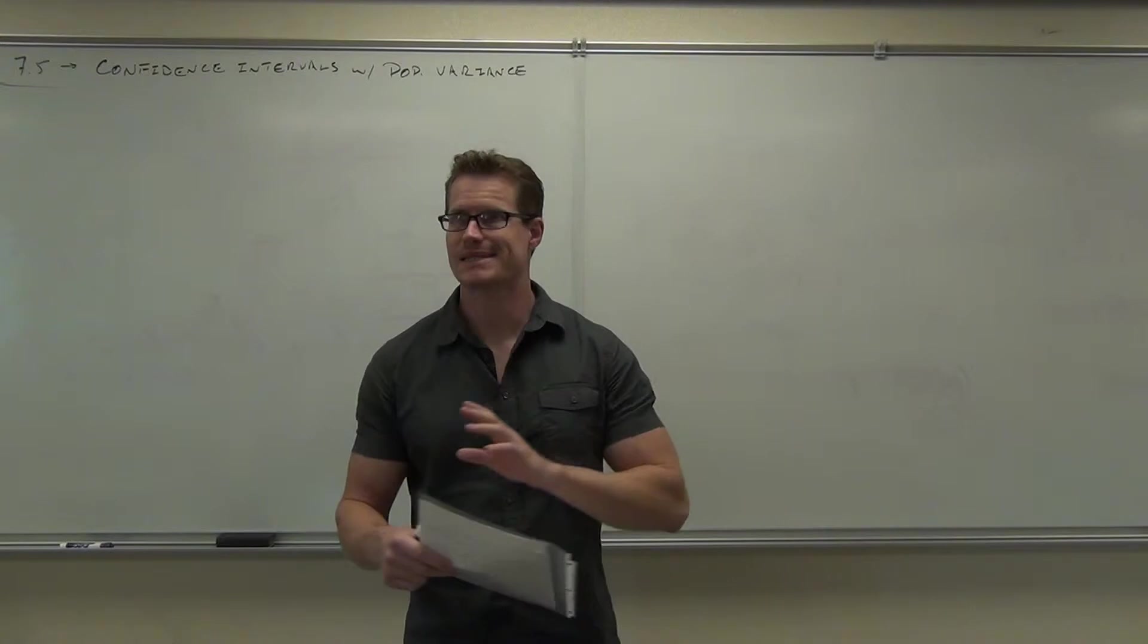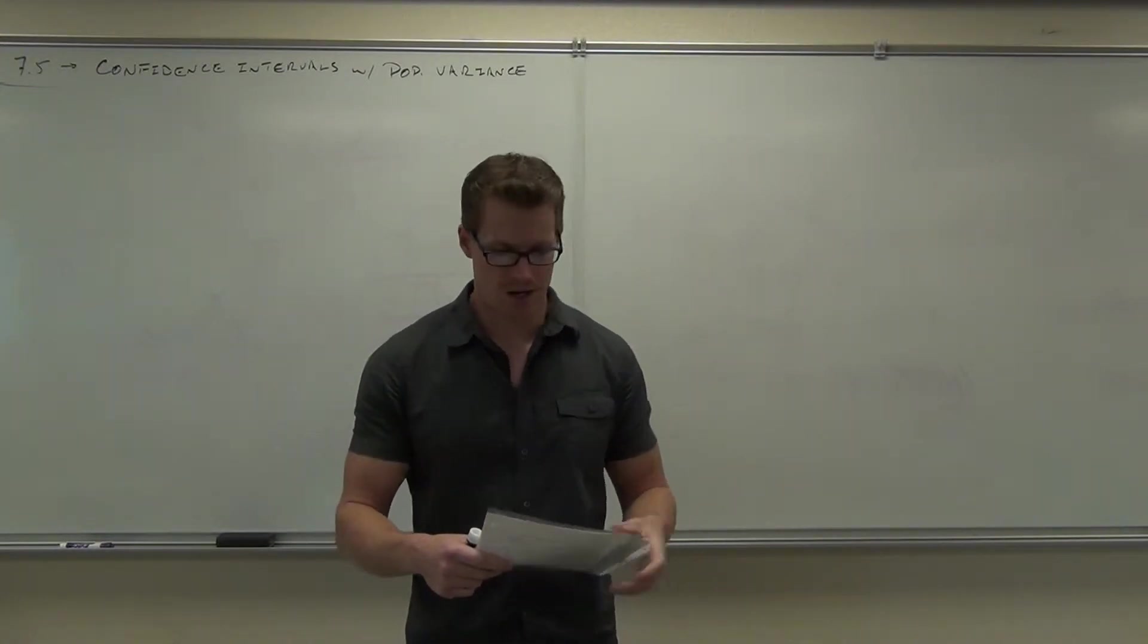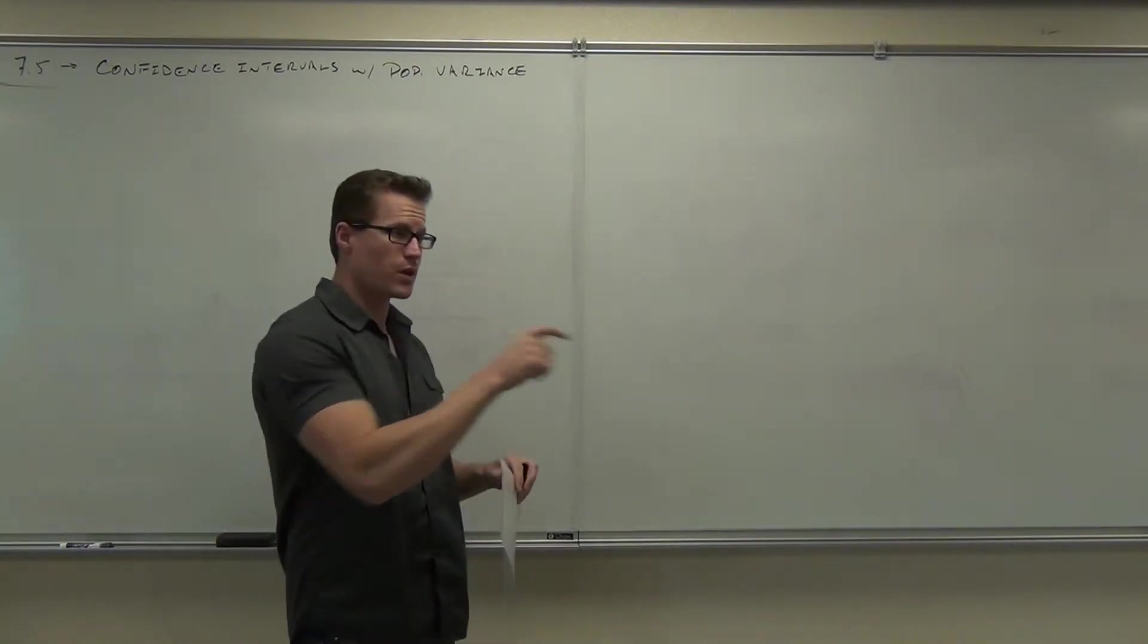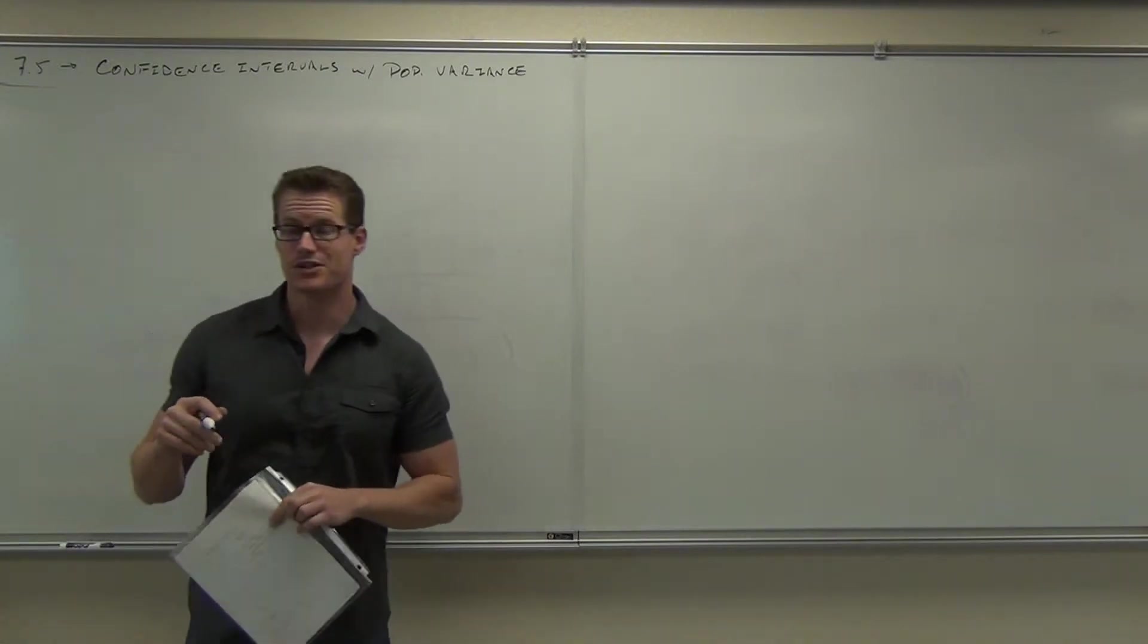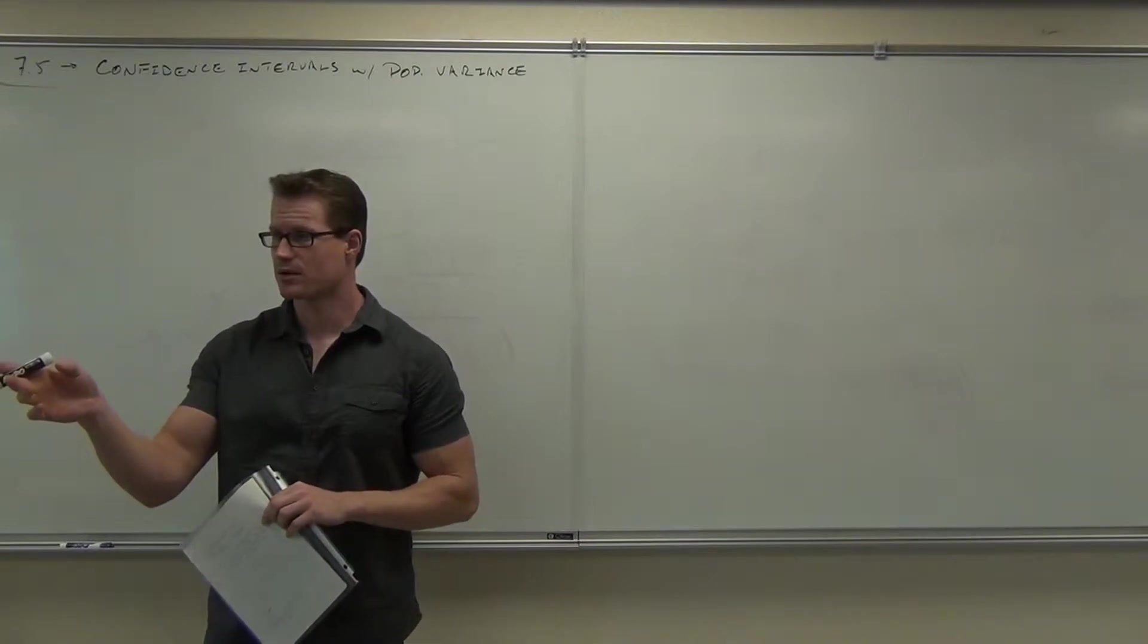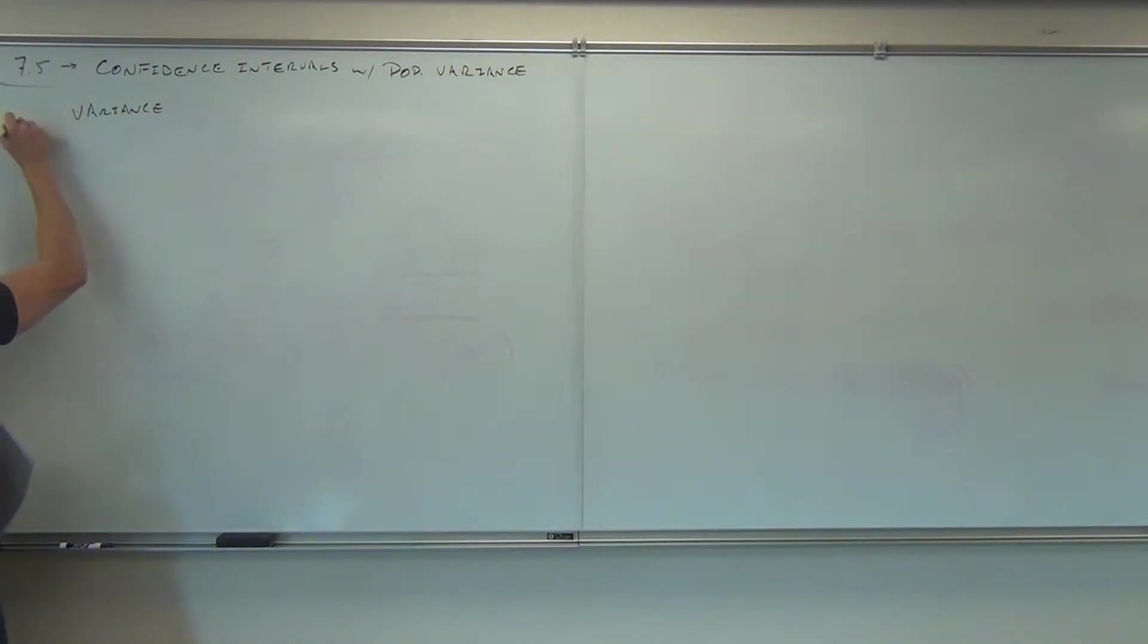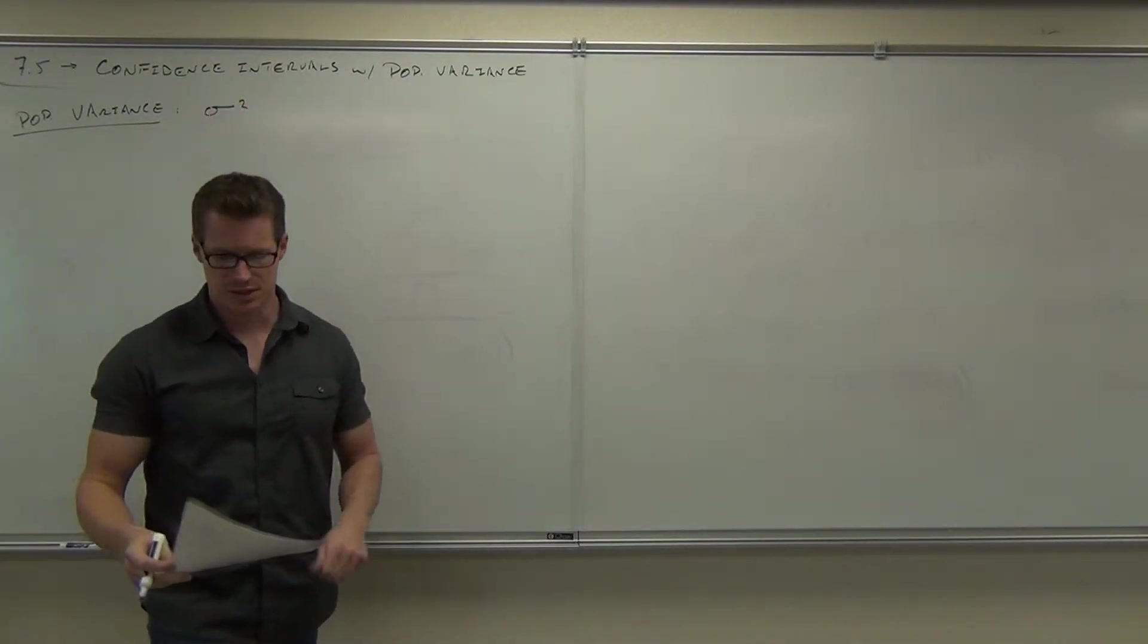For hypothesis testing, same idea, same seven steps. You just need to know how to use the table. So right now we're going to be estimating population variance and with it, standard deviation. What was a symbol for population variance? Sigma squared. So population variance, we're talking about sigma squared.